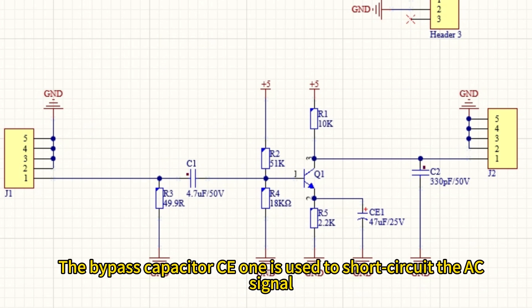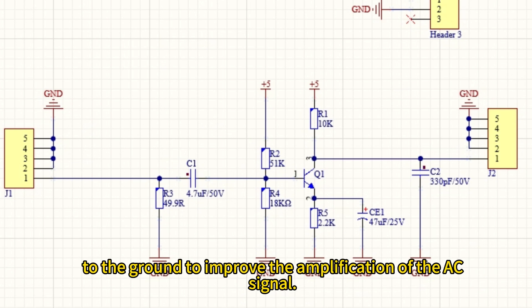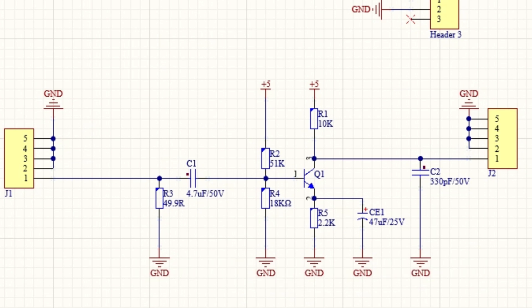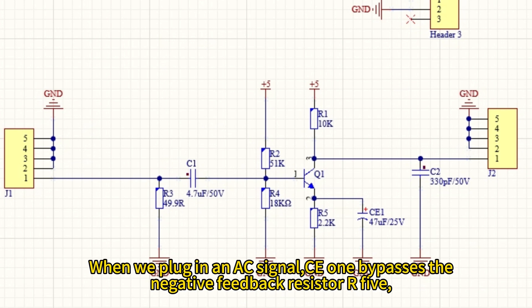The bypass capacitor CE1 is used to short-circuit the AC signal to ground to improve the amplification of the AC signal. When we plug in an AC signal, CE1 bypasses the negative feedback resistor R5.